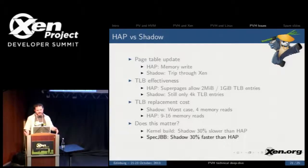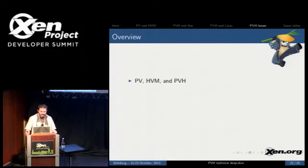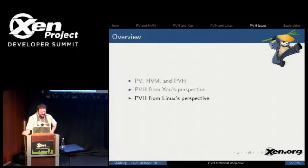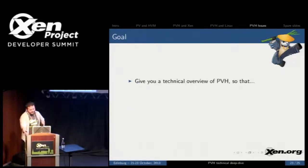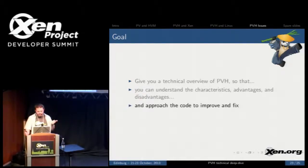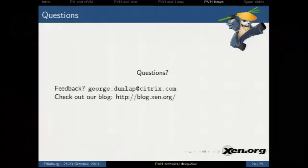Moving to PVH, this is one of the effects — we'll have to deal with this HAP versus shadow thing, and that's going to be something we'll have to continue to look at in the future. So we've talked about PV, HVM, and PVH. We've looked at PVH from Xen's perspective and from Linux's perspective. We've talked about a number of issues in PVH, and hopefully I've given you a technical overview so you will be able to better understand the characteristics, advantages, and disadvantages, and many of you will be able to approach the code to improve and fix it if necessary. With that, I'll take any questions.